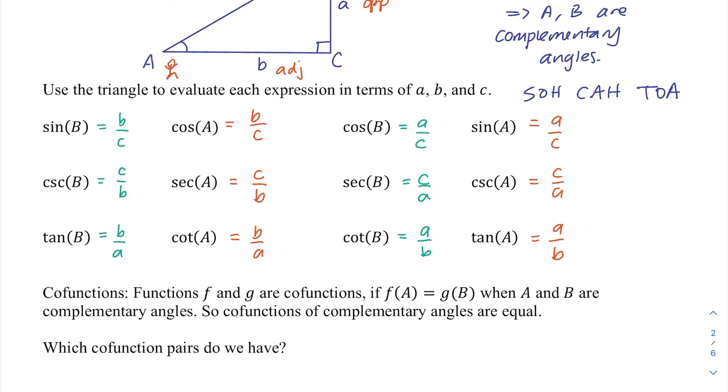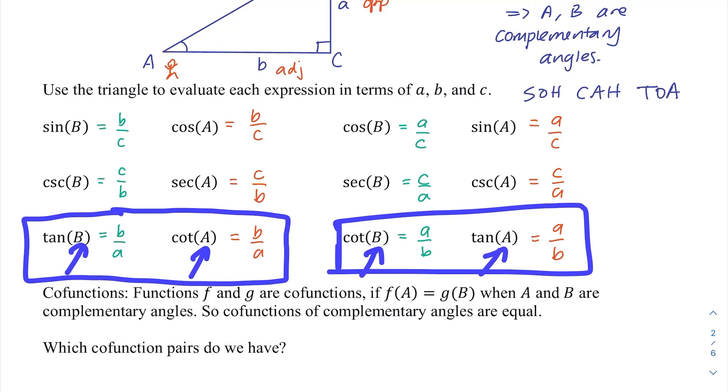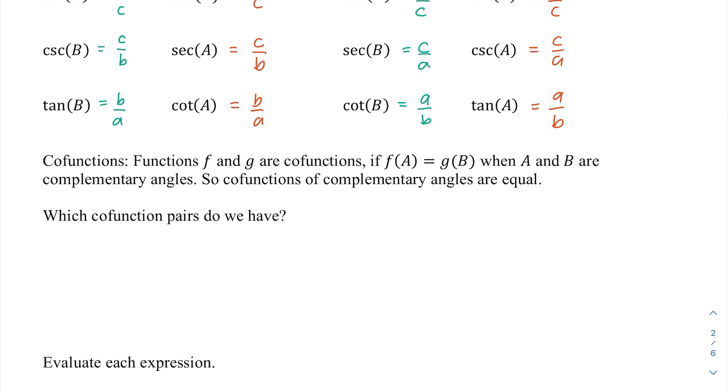Let's look at cosecant and secant. We have more matching outputs for complementary angle inputs. Tangent and cotangent. Outputs are matching when complementary angles are the inputs. So which co-function pairs do we have? We can see that sine and cosine, secant and cosecant, and tangent and cotangent.